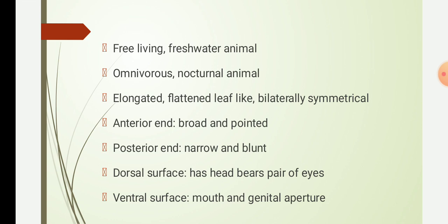In Planaria, the anterior end is broad and pointed, while the posterior end is narrow and blunt. The dorsal surface is convex and bears two pairs of eyes. The ventral surface is flat and ciliated.